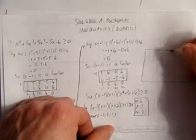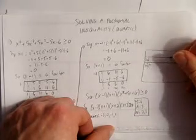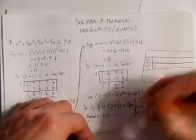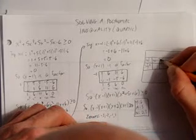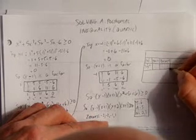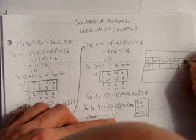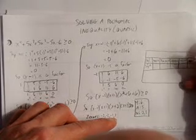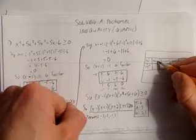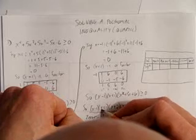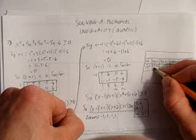We'll make an interval table with an interval column and a sign column. The intervals to check are: x less than negative 3, between negative 3 and negative 2, between negative 2 and negative 1, between negative 1 and 1, and x greater than 1. For x less than negative 3, pick negative 100 — all four brackets give negatives. Four negatives multiplied together gives a positive.